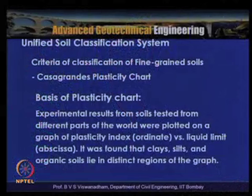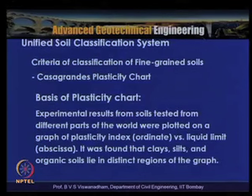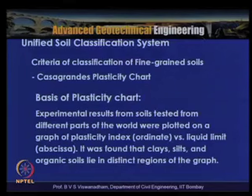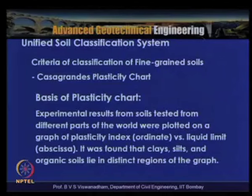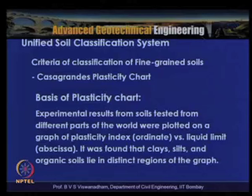For fine-grained soil classification, the criteria are based on Casagrande's plasticity chart, where plasticity index is plotted on the y-axis and liquid limit on the x-axis. Experimental results from soils tested worldwide were plotted, and it was found that clays, silts, and organic soils lie in distinct regions of the graph — allowing the chart to distinguish between these soil types.